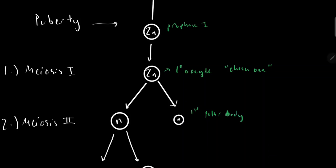First polar body. This one right here, circled in green, is called the secondary oocyte, and this cell, this haploid cell, will undergo meiosis II and continue the meiotic divisions.